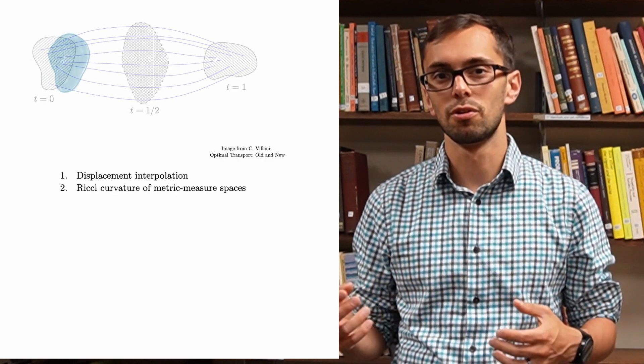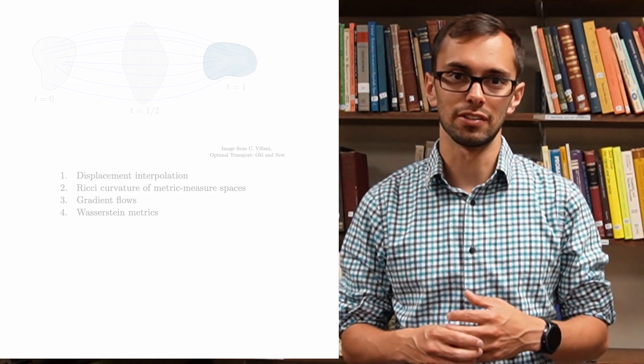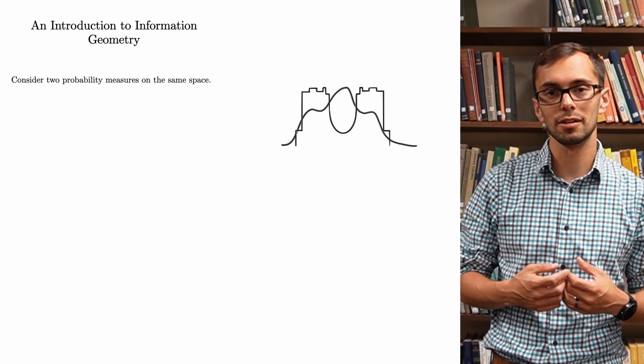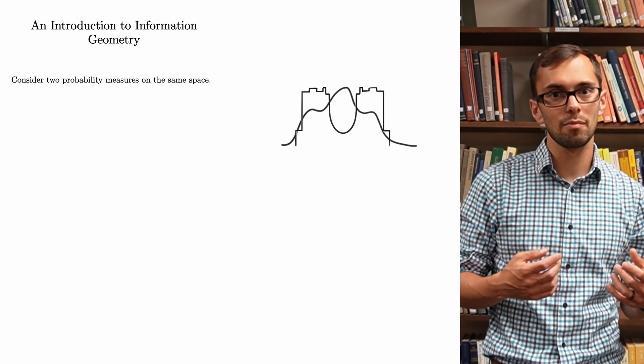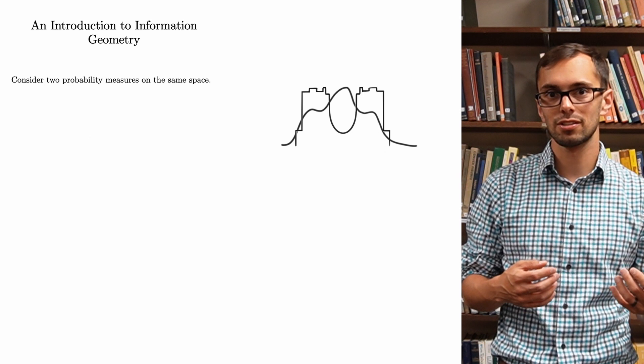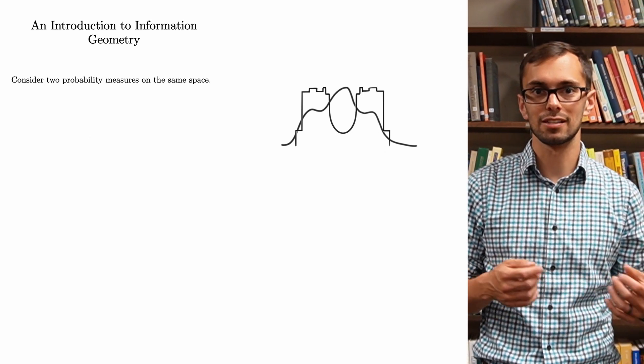That concludes the very brief introduction to optimal transport. There's much more that can be said, but these are a few of the central results in the field. Let's now turn our attention to information geometry. For this, we again consider two probability measures, but this time we want them to be defined on the same space. More precisely, we need one of them to be absolutely continuous with respect to the other.